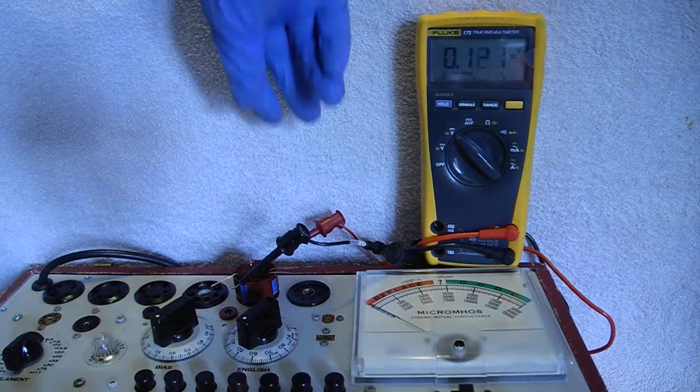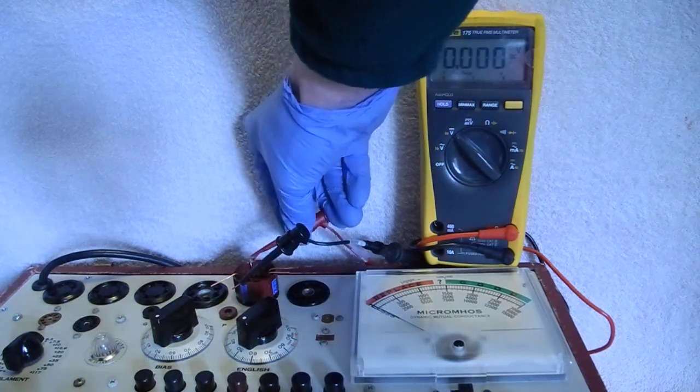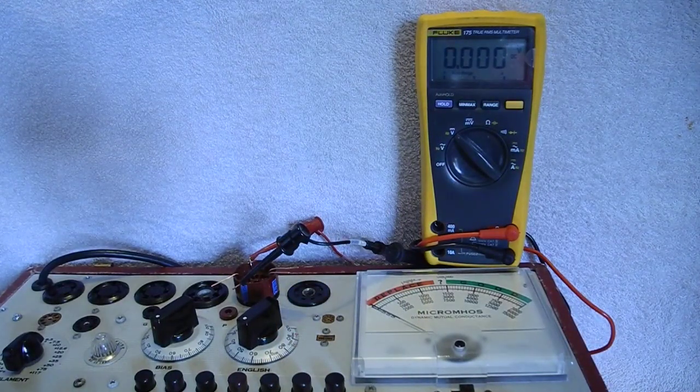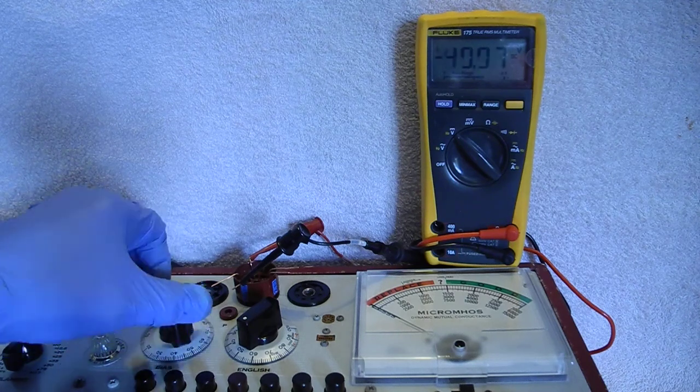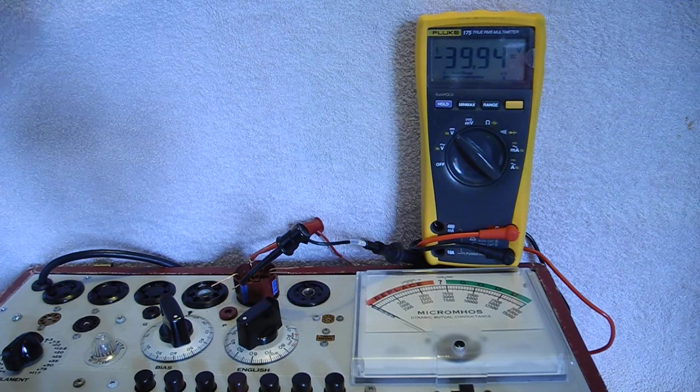The next step is we move our clip over to the grid, which is pin 5, and we check our grid bias voltage at a bias of 100. It should be negative 40 plus or minus 2 volts.